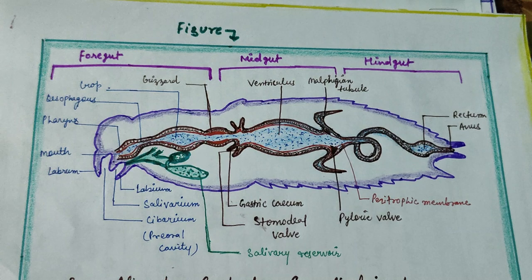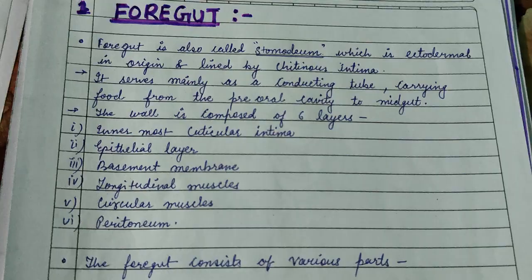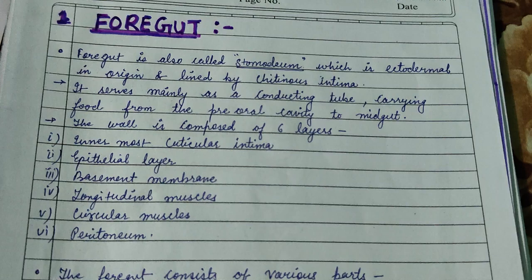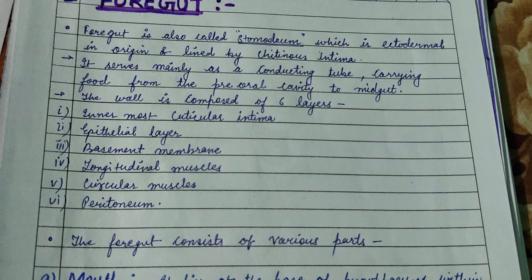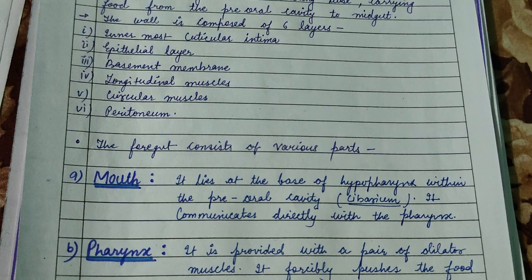The hindgut is the rest of the posterior part of the body. The foregut is of ectodermal origin and is lined by the chitinous intima. There are mainly six layers: the innermost cuticular intima, then epithelial layer, basement membrane, longitudinal muscle, circular muscle, and the outermost peritoneum.